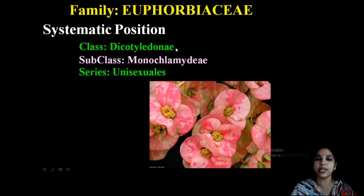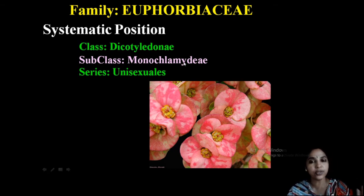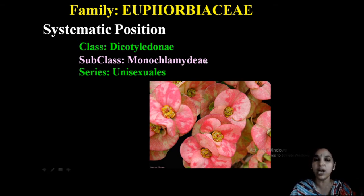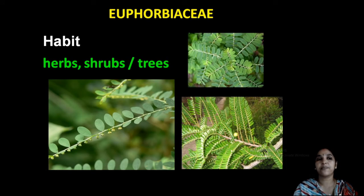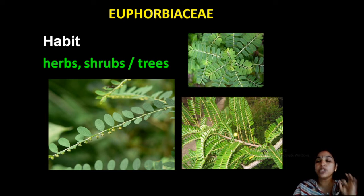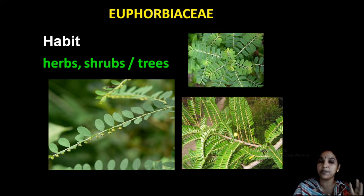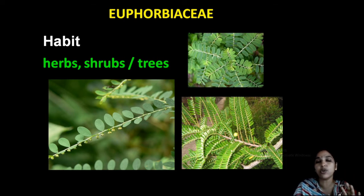Dicotyledonae — you know, two cotyledons. Monochlamydae — no differentiation, only a single whorl perianth. Unisexuals means male flower or female flower separately. Looking into the habit — most of the plants are herbs or shrubs, though trees are also present.